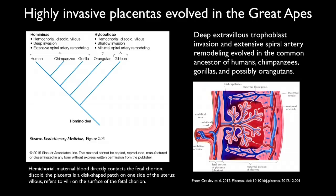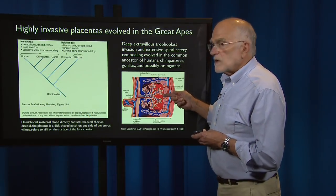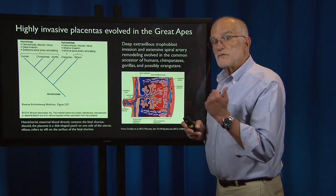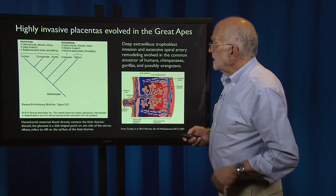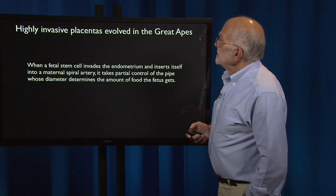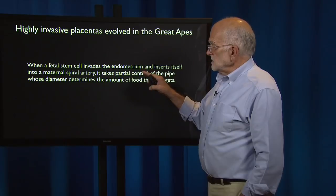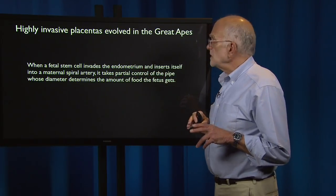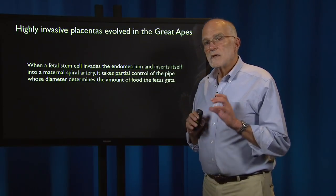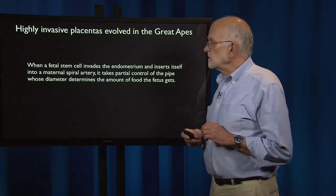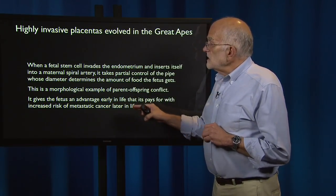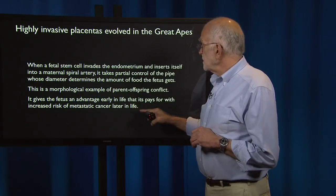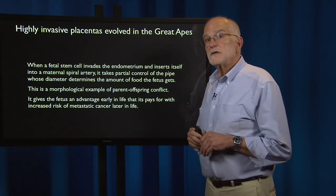Fetal tissue invades into the endometrium, and stem cells from the fetus can actually go in and control part of the diameter of the spiral arteries. When a fetal stem cell invades the endometrium and inserts itself into a maternal spiral artery, it is taking partial control of the pipe whose diameter determines how much food the fetus receives. That is a morphological example of parent-offspring conflict — it gives the fetus an early advantage but pays for it with increased risk of metastatic cancer later in life.